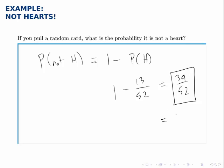And by the way, of course this simplifies down to 3 fourths or 0.75, which also makes sense. If 1 fourth of the cards are hearts, 3 fourths of the cards are not hearts, so the probability of not drawing a heart is 3 out of 4.